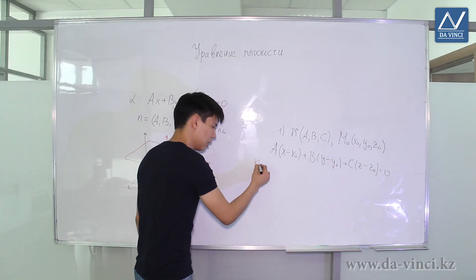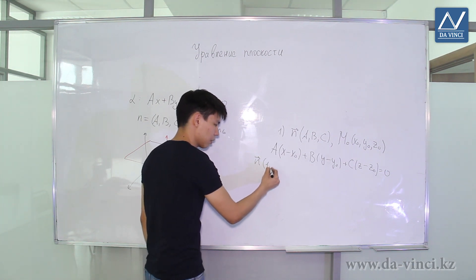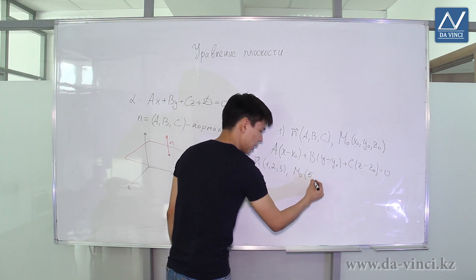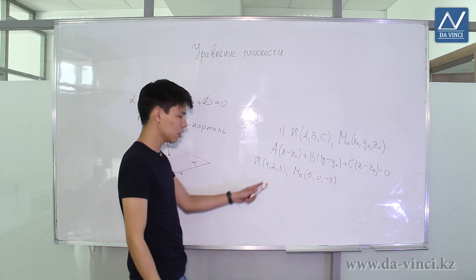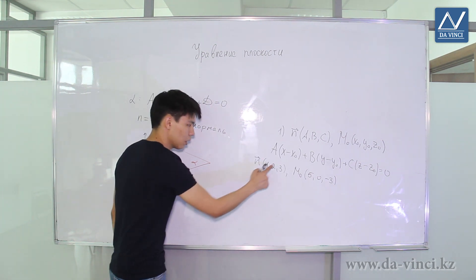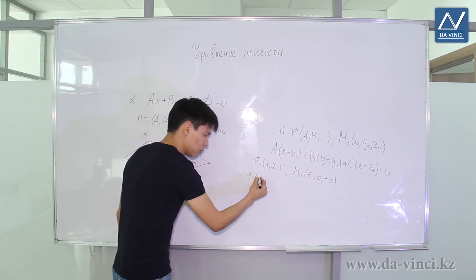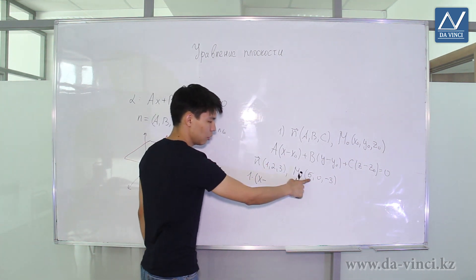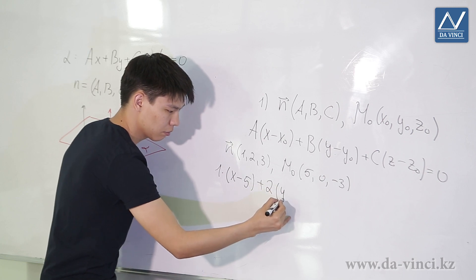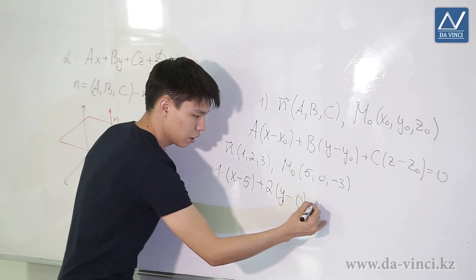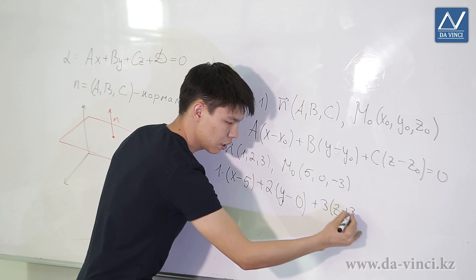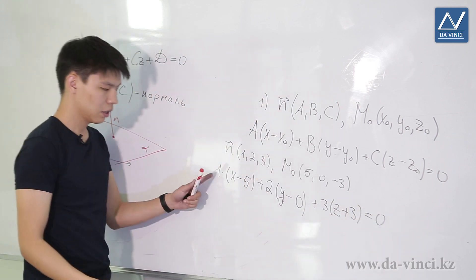For example, let's have a vector n with coordinates 1, 2, 3 and point M0 with coordinates 5, 0, minus 3. It is required to draw up an equation of the plane that passes through M0 and is perpendicular to the vector n. We use the ratio: A, in our case it is 1, multiplied by (x minus x0), plus B multiplied by (y minus y0), where y0 is 0, plus C by (z minus z0), that is minus minus 3 equals 3, is equal to 0. We got the equation of our plane.